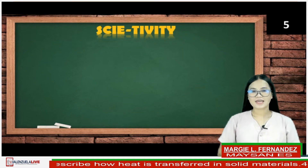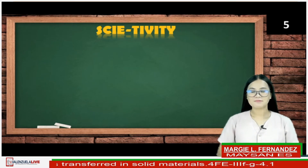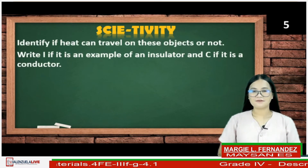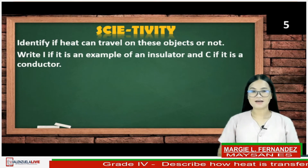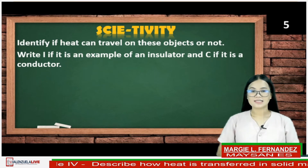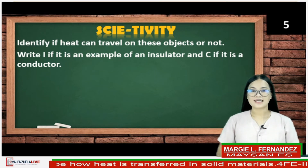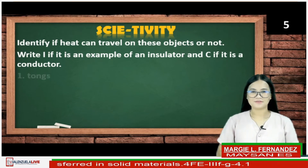Let us check how well you understand our lesson for today. You have five seconds to observe each given picture. Identify if heat can travel through the object or not. Type C if it is a conductor and I if it is an insulator, and put your answer in the comment section below. Are you ready? The timer starts now.